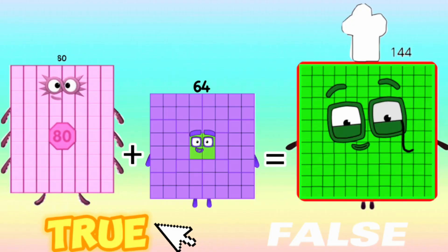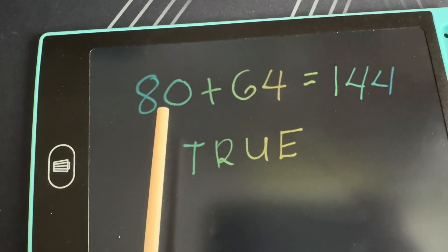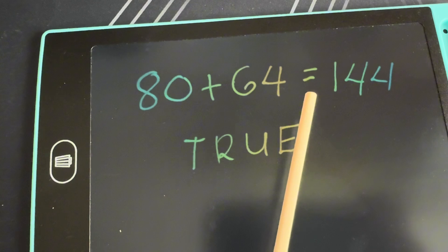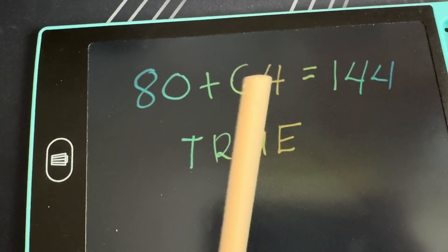Next, 80 plus 64 is equals to 144. And it's true. And again, 80 plus 64 is equals to 144.